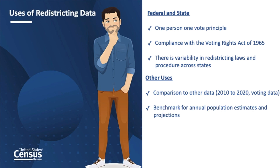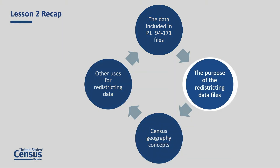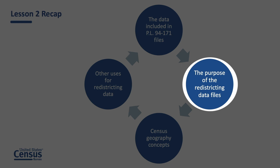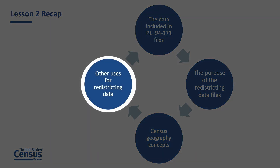The 2020 census population data establishes the benchmark for future population estimates and projections, which are calculated annually. While more data and tabulations from the 2020 census will be released in coming months, this initial data release may also be of interest to those who need data on these topics — someone like a voting researcher or a grant writer, for example. In summary, lesson two covered PL 94-171 files, the purpose of redistricting files, the subjects in each PL 94-171 data file, beginner census geography concepts, and other uses for the redistricting data including comparing data sets and supporting various researchers.